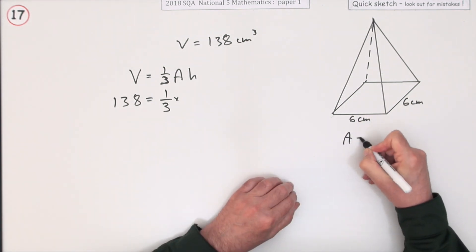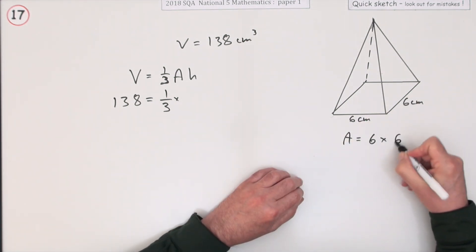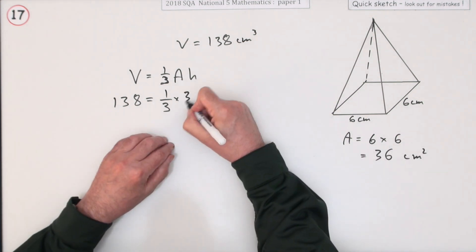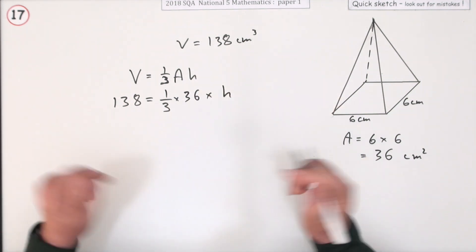It's a square. Area of a square, length times breadth, same as a rectangle. Six times six, that's 36 centimetres squared for the area of the base. So it's a third of 36 times h. Everything's a number apart from h so you can find it.